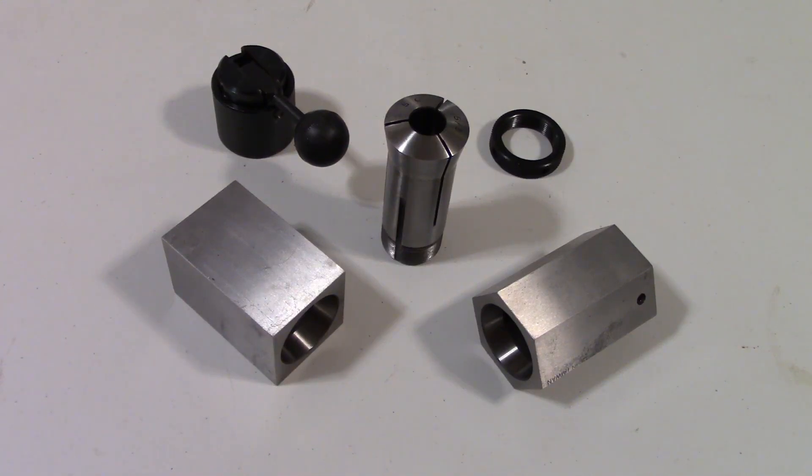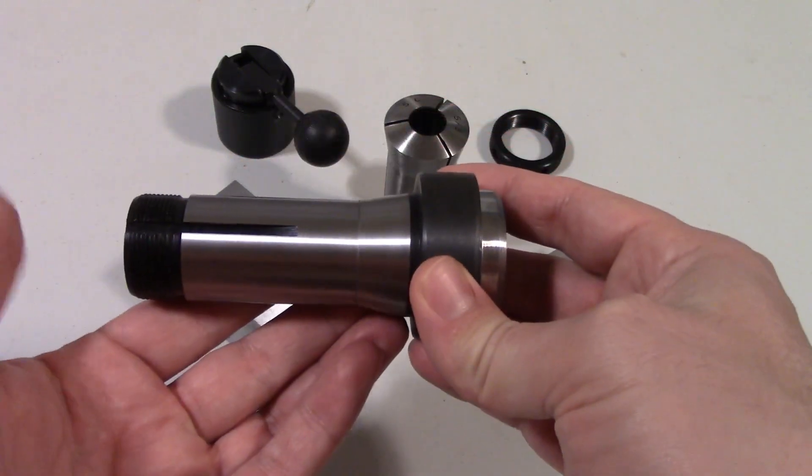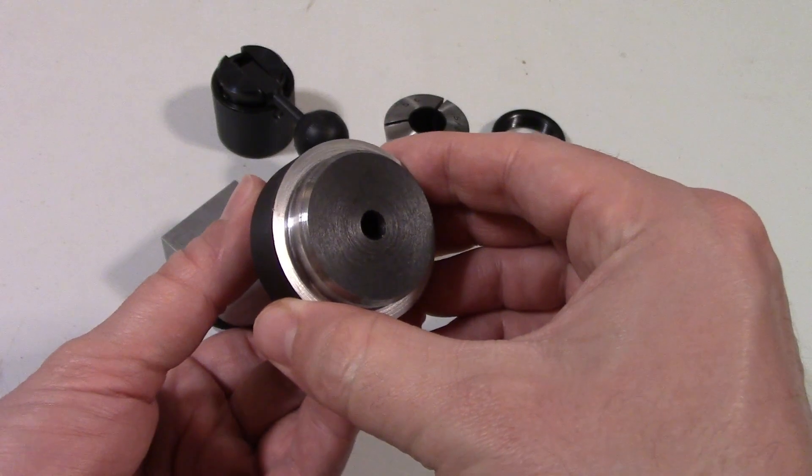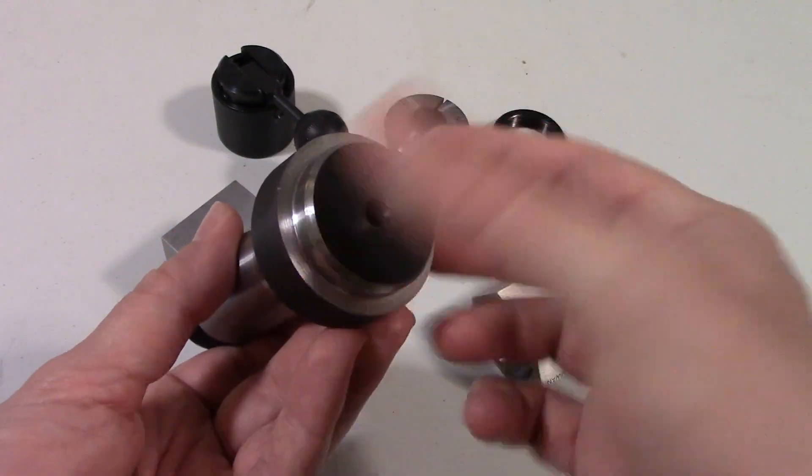There are other tools available with 5C shanks that will also work in these, such as fixture mounts, which are 5C shanks with a solid face that can be machined to fit your part. These are available in a variety of diameters and lengths.